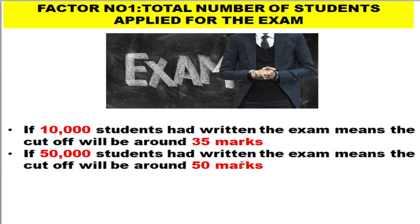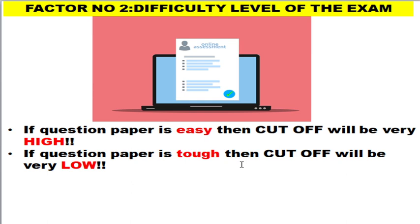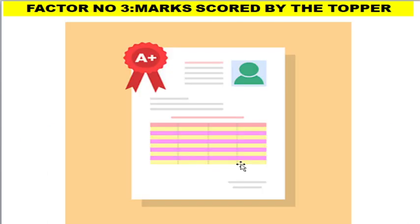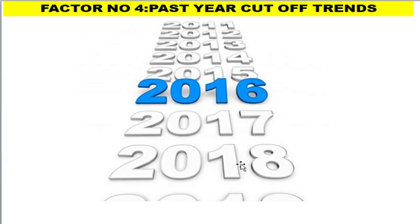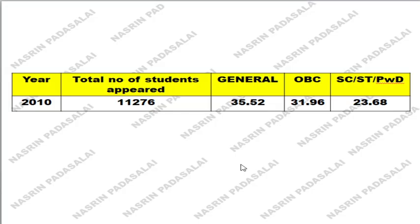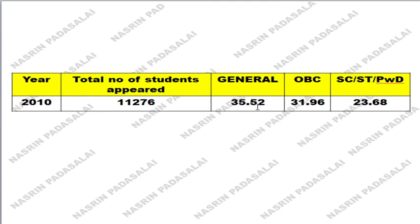Next factor is the difficulty level. If the GATE biotechnology question paper is easy, the cutoff will be very high; if it is tough, the cutoff will be very low. Next is the marks scored by the topper, which also plays an important role. The fourth factor is the past year cutoff trend. I have analyzed the past 12 years of cutoff data starting from 2010, with year-wise figures and total number of candidates, since cutoff also varies by category.